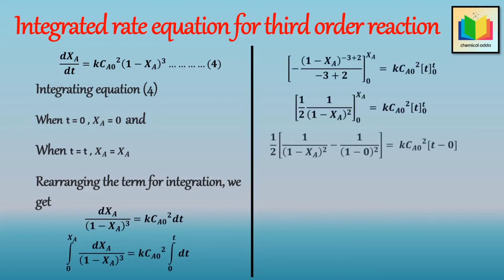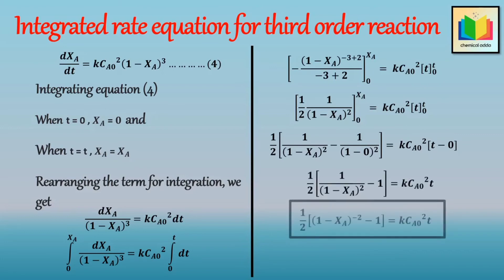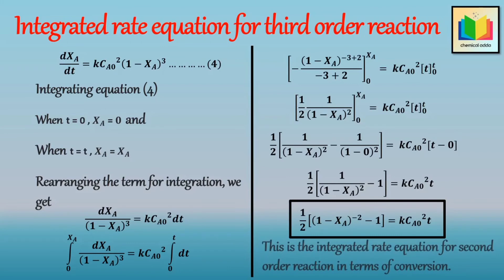After integration, applying limits, and rearranging the terms, we get: (1/2) · (1 − XA)^(−2) = k·CA0²·t. This is the integrated rate equation for third order reaction in terms of conversion.